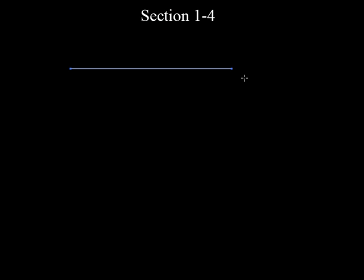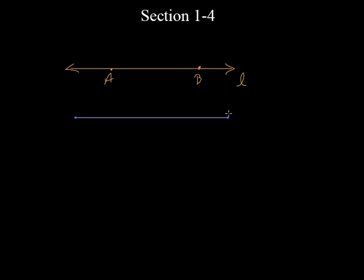We've talked about different things. We've learned how to label them. So what was this thing? That was a line. We know how to label it, right? You can have two capital letters, or you could just have a little letter on the outside of it. The line kept on going in both directions. But then we talked about this thing — what did we call it if it started and stopped? This is a line segment.